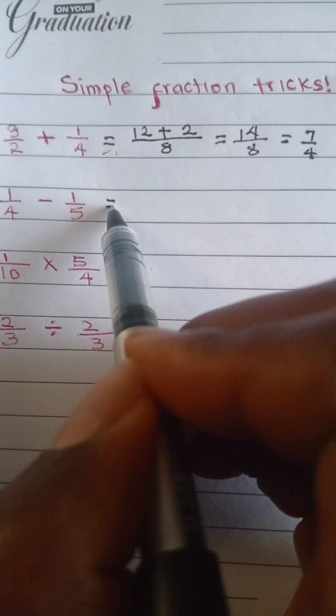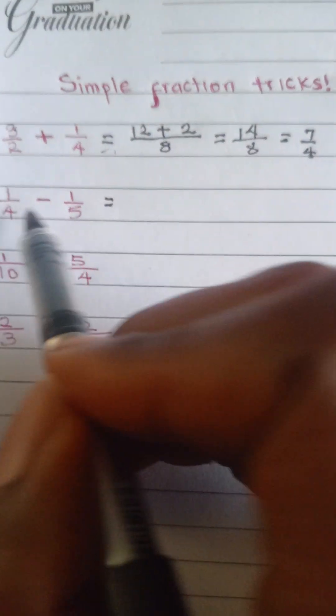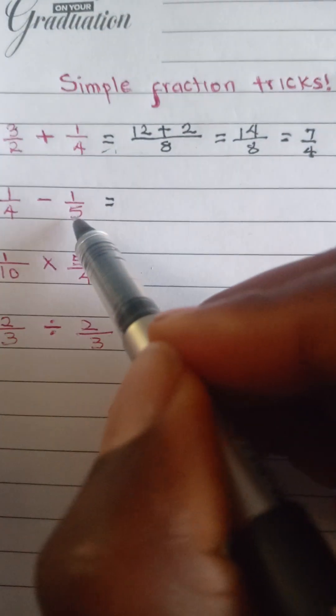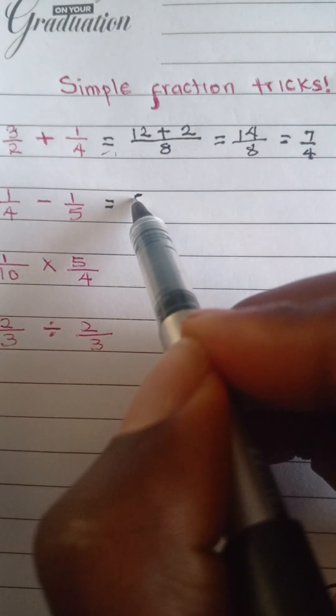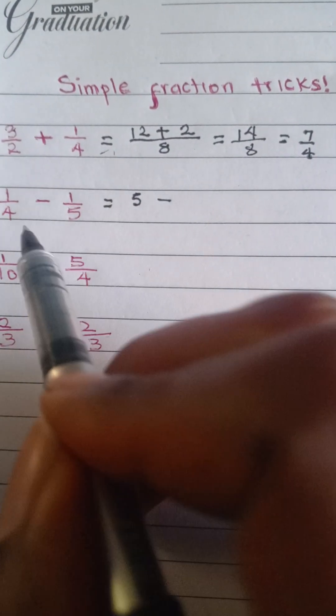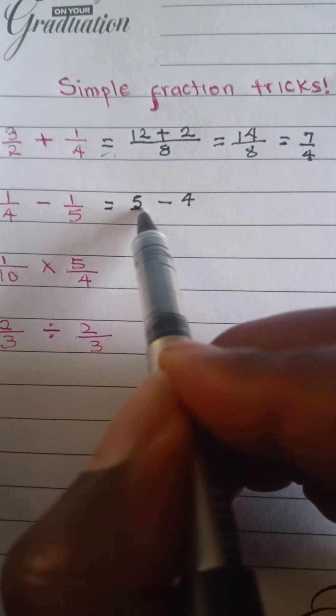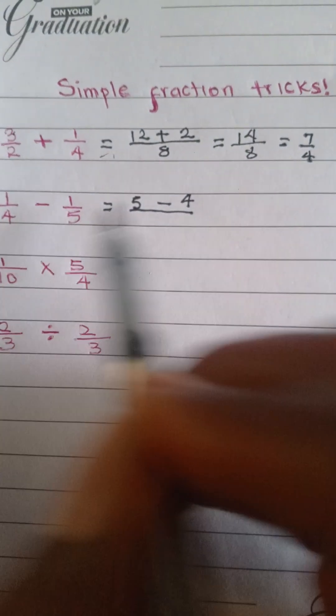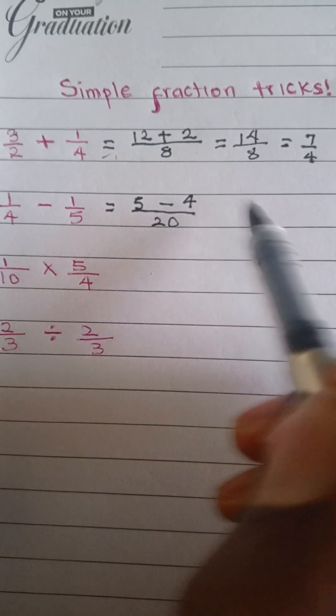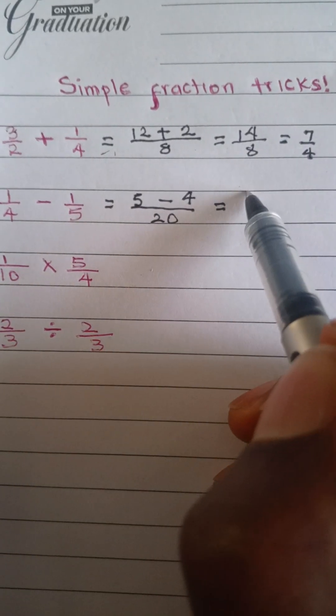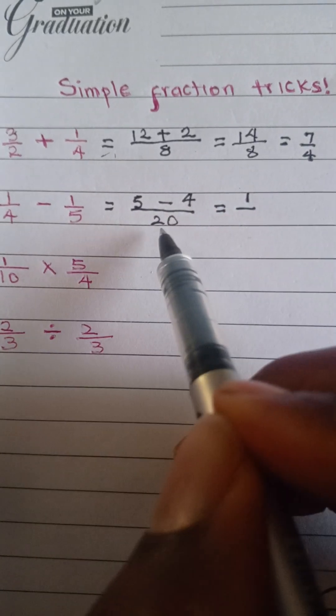The next one is 1 over 4 minus 1 over 5. So 1 times 5 is 5, minus 4 times 1 is 4, all over 4 times 5 is 20, which is going to give you 5 minus 4 is 1 over 20.